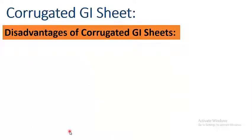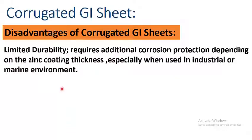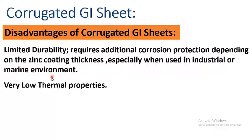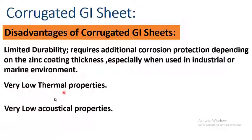These corrugated sheets have some disadvantages, which are limited durability and they require additional corrosion protection depending on the zinc coating thickness, especially when used in industrial or marine environments. They have very low thermal properties and very low acoustical properties, meaning they are noisy and sound travels very easily through them.